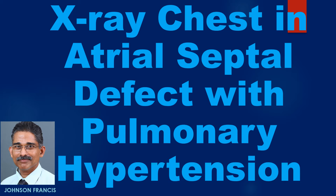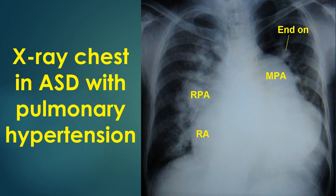X-ray chest PA view in atrial septal defect with pulmonary hypertension. The main pulmonary artery is grossly dilated. The right pulmonary artery is also quite enlarged. Right atrial enlargement is seen as shift of cardiac border to the right side of the spine. Pulmonary vascularity is increased and prominent endon vessels are also seen.